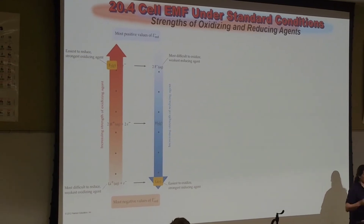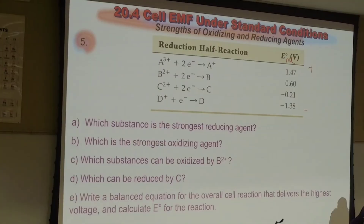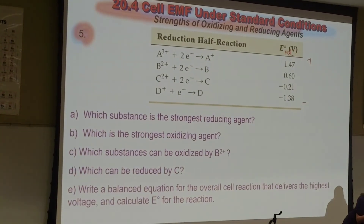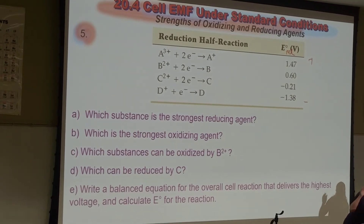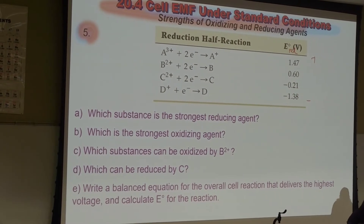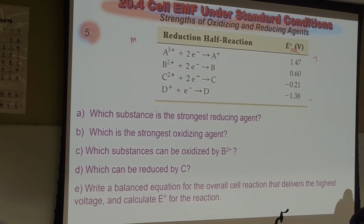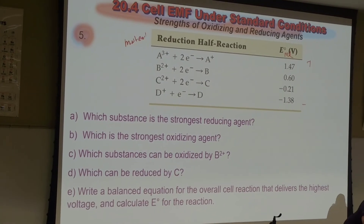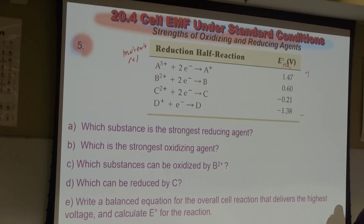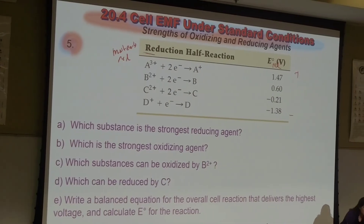So let's look at the relative strengths. This is at the bottom of the reduction table. The one at the top is the most easily reduced, and the one at the bottom is the least easily reduced.